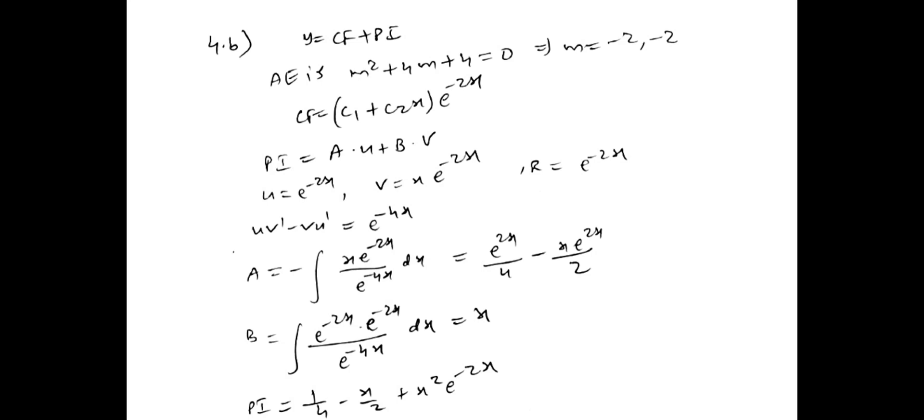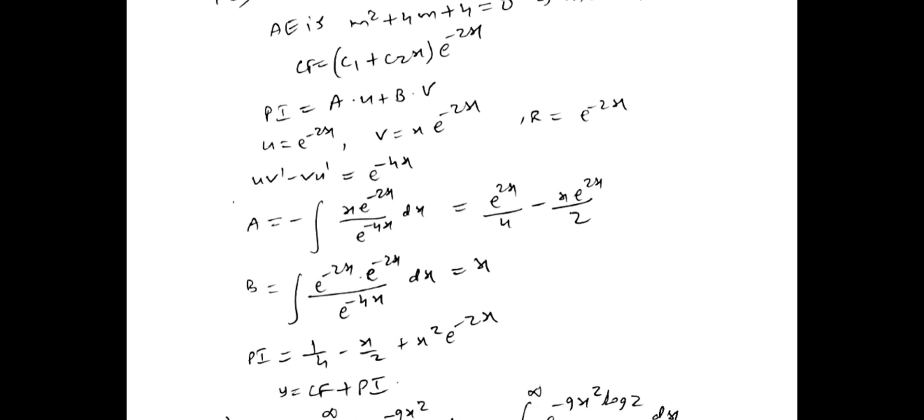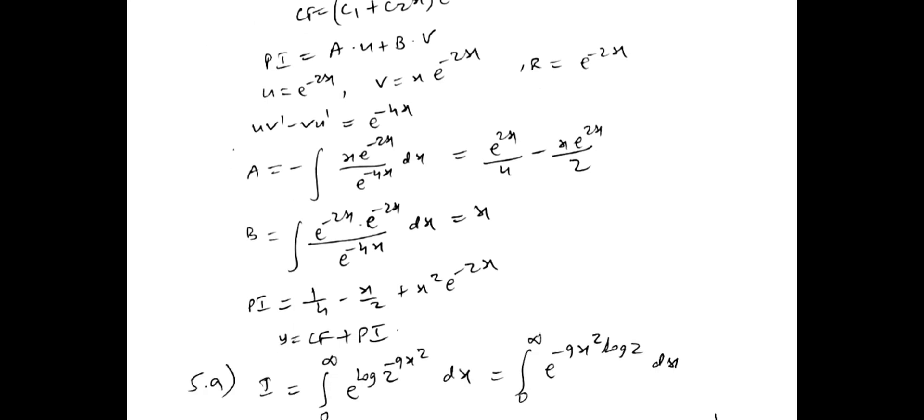Then fourth my B bit. Y is equal to CF plus PI is same. So we have to do method of variation of parameter. So here u and v I took. In our videos it is a and b. So a we calculated a value and we calculated b value. We substituted.